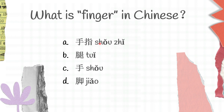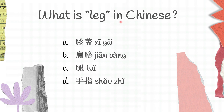Moving on to another question here: what is leg in Chinese? A, xīgài; B, jiānbǎng; C, tui; D, shǒuzhǐ. Xīgài is knee, jiānbǎng is shoulder, tui is leg, shǒuzhǐ is finger. And C is the right answer for this question, tui.